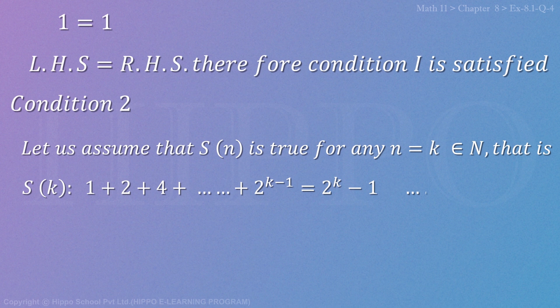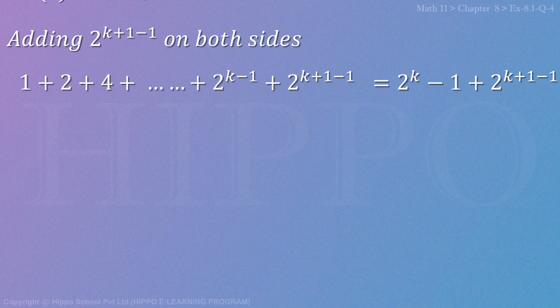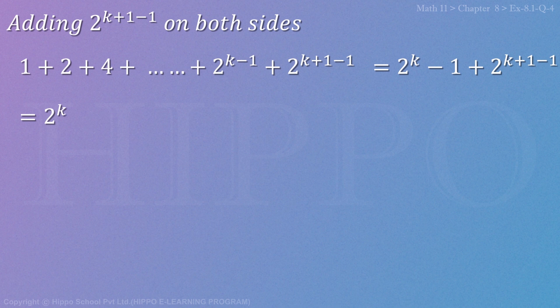Now we need to check for k + 1, so replacing k with k + 1, we get 2^(k+1-1). Adding 2^(k+1-1) on both sides: 1 + 2 + 4 + ... + 2^(k-1) + 2^(k+1-1) = 2^k - 1 + 2^(k+1-1).